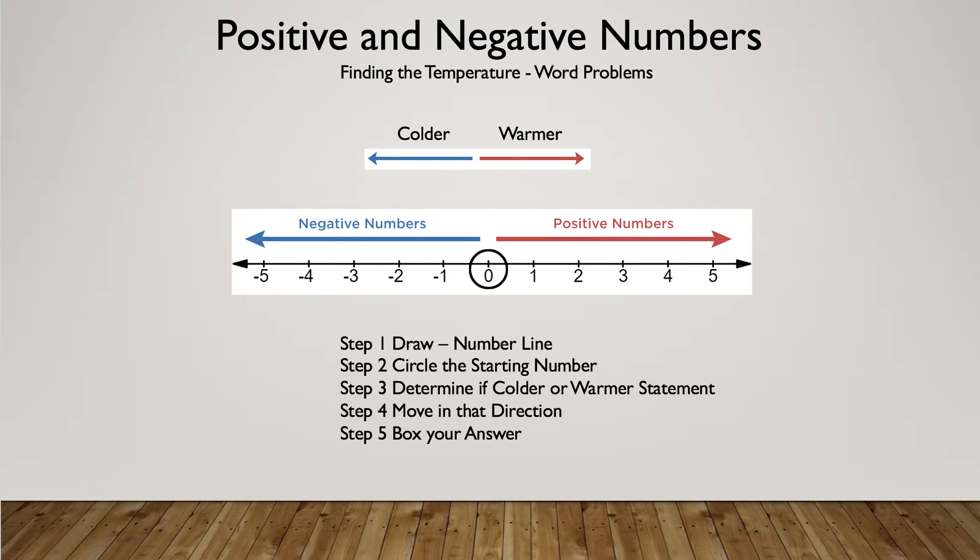So if you follow these five steps, you'll get it correct the majority of the time. If you don't get it correct, then you just try again. Step one, draw a number line. Step two, circle the starting number. Step three, determine if it's a colder or warmer statement. Step four, move in that direction. And then step five, box your answer. Let's go on to the first example.